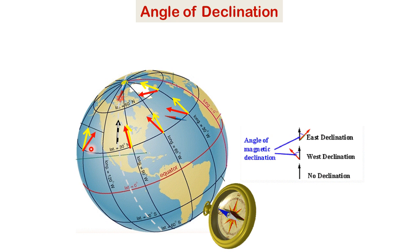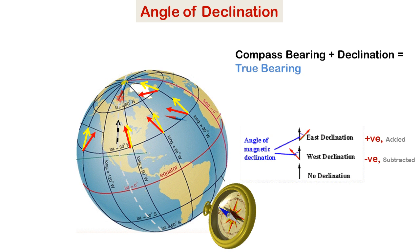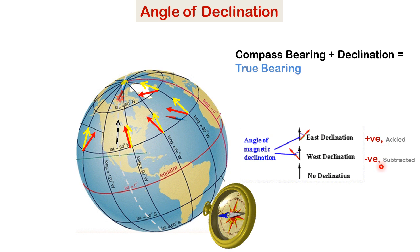This is east declination and this is west declination. Declination is used to find the true bearing. The declination is added to the compass reading to arrive at the true bearing. If it is east declination it is added, and if it is west declination the value of declination is subtracted to arrive at the true direction in which the user should move to reach his destination.